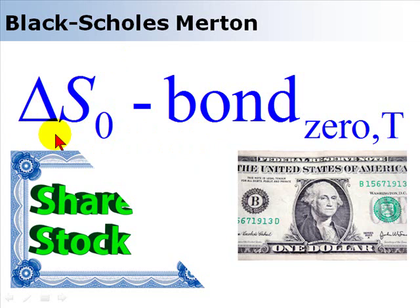The idea, the intuition behind the Black-Scholes, is that if we write a call option, we can hedge against that obligation with a portfolio in two parts — a replicating portfolio — such that if we dynamically rebalance it, it's going to always match the payoff on the call that we write.